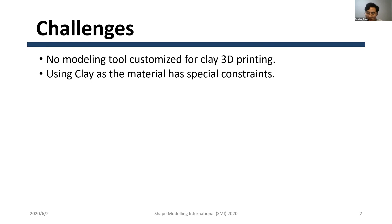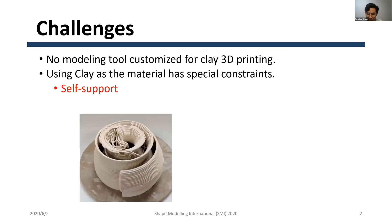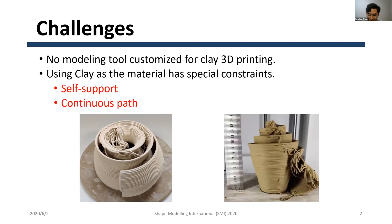In addition, there are special constraints. Firstly, too large an inclination angle causes the model to be unable to support itself and collapse. And because of the viscosity of clay, if the printing path is discontinuous, moving the print head without extruding will stress the structure and induce unwanted deformations that amplify over time and eventually lead to failure.